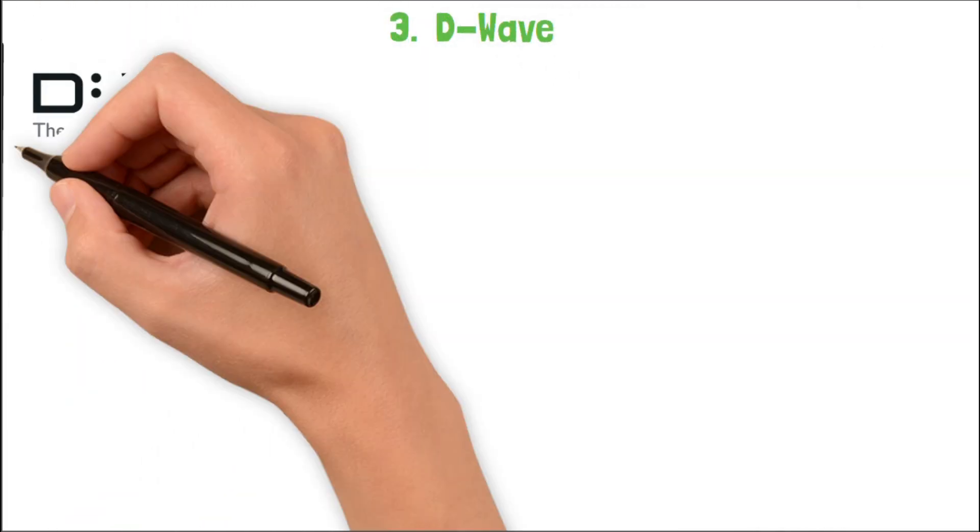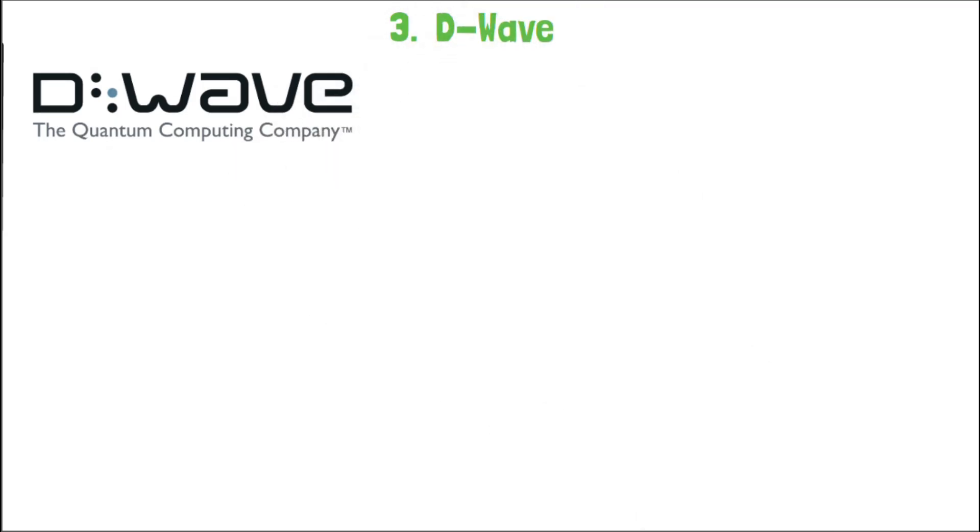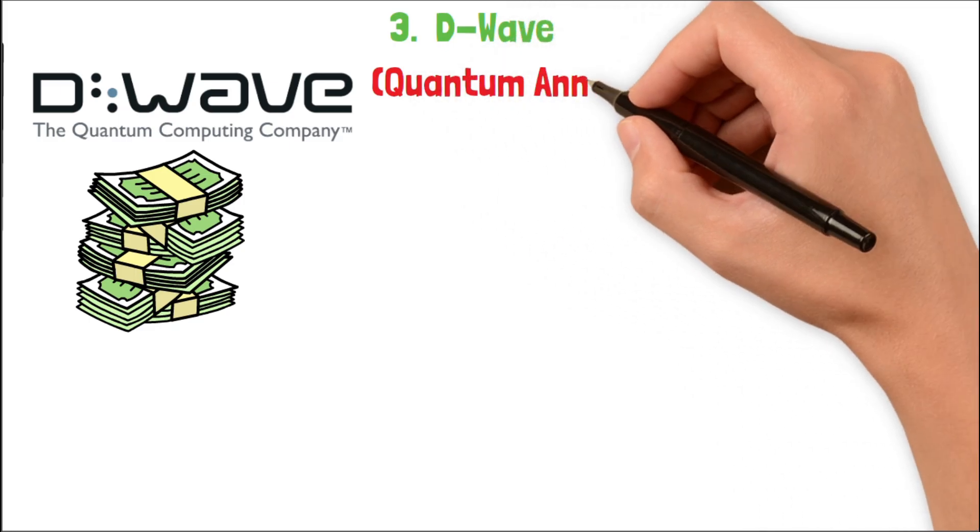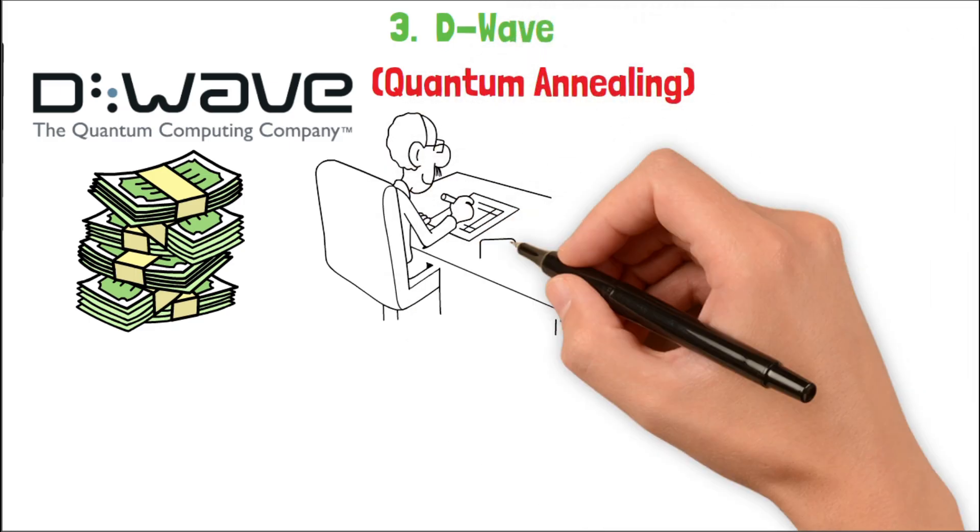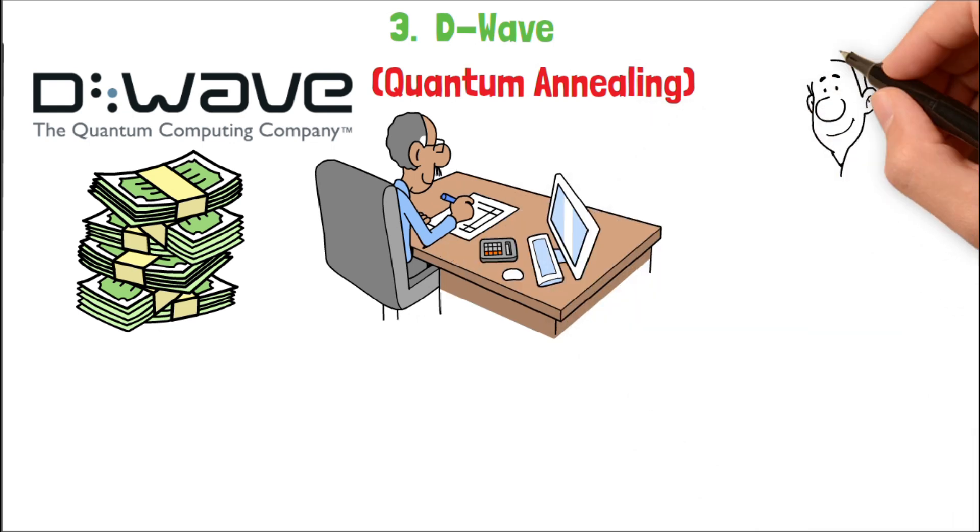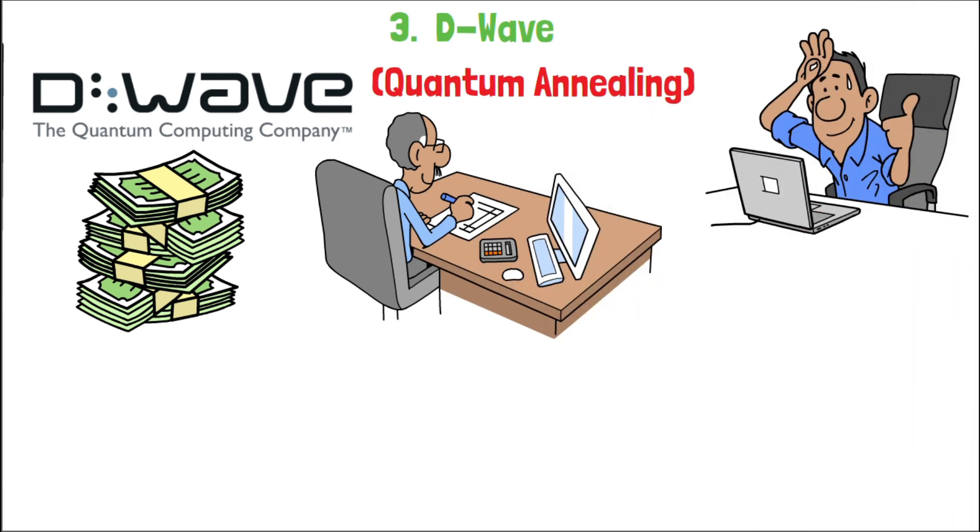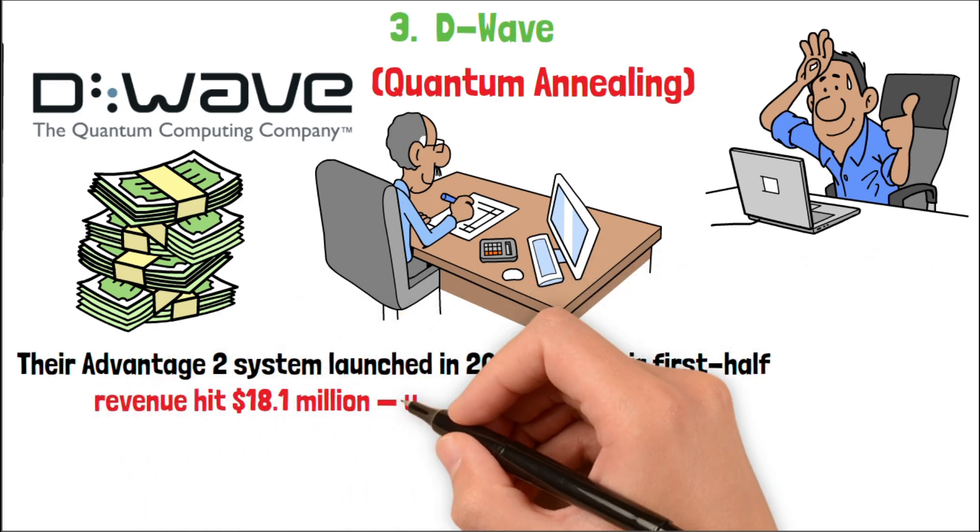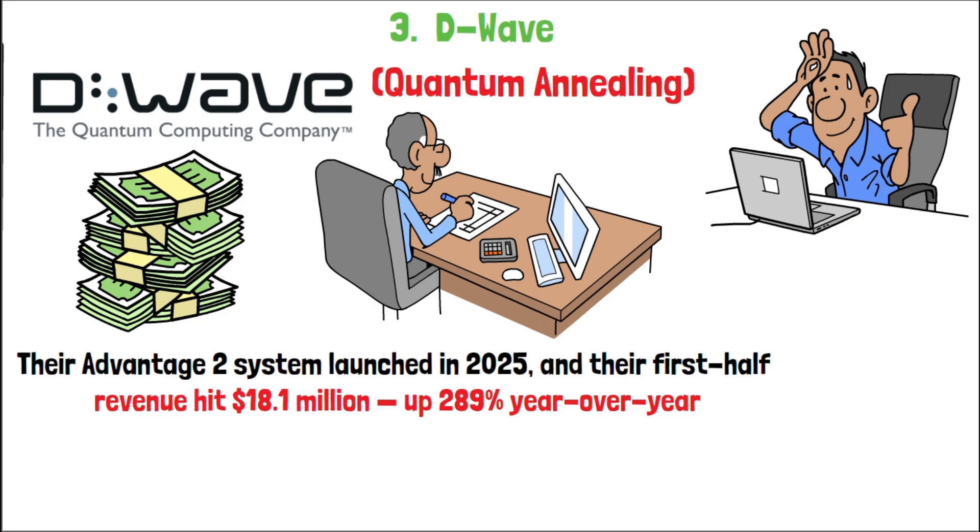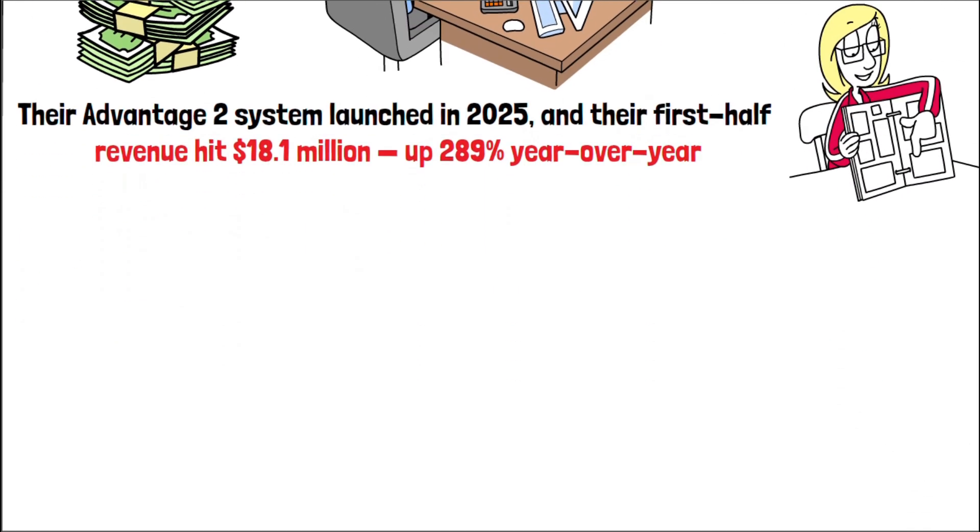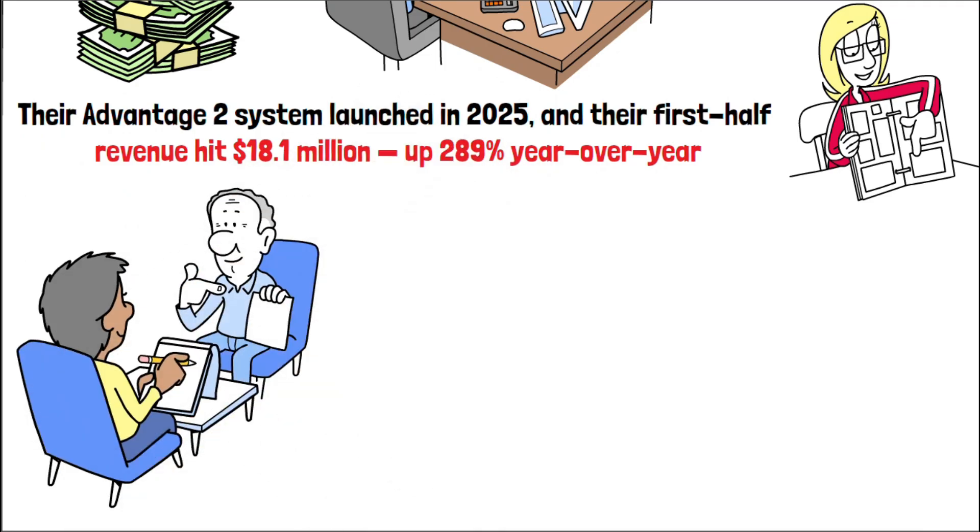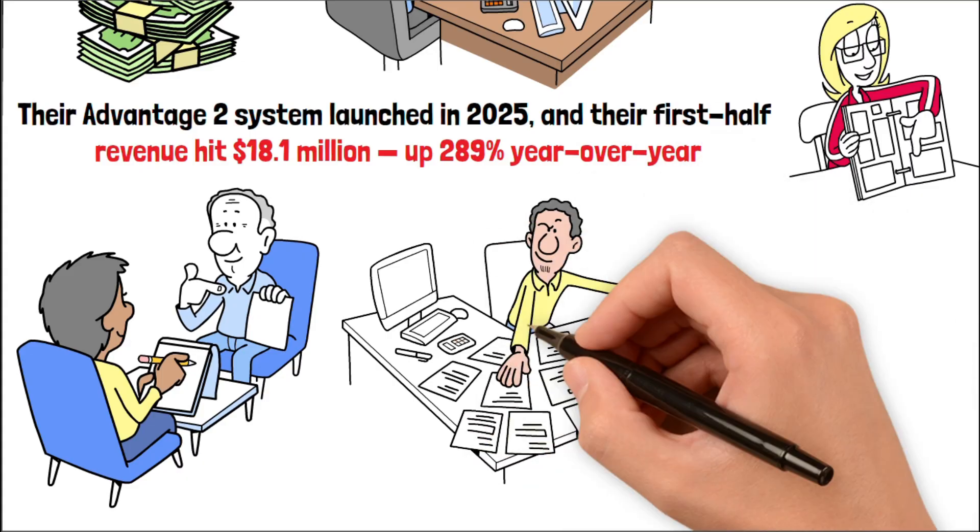And finally, D-Wave, the rebel. While everyone else is waiting for fault-tolerant quantum, D-Wave is making real money today with a different model, quantum annealing. They specialize in solving optimization problems in logistics, supply chains, and finance. Stuff companies are already facing. Their Advantage 2 system launched in 2025, and their first half revenue hit $18.1 million, up 289% year over year. These are paying clients solving real problems right now. D-Wave is already on AWS Braket, and has signed government procurement deals and commercial contracts. They're not waiting for the future. They're monetizing quantum today.